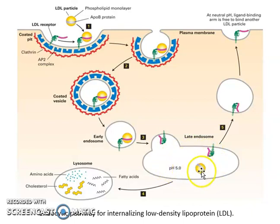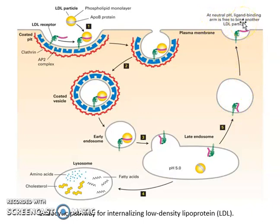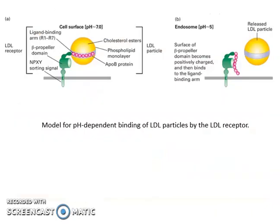The late endosome fuses with the lysosome, where enzymes degrade the LDL particle into its components — amino acids, cholesterols, and fatty acids — which are used in the cell. The receptor is then recycled back to the cell surface, where at neutral pH the ligand-binding arm undergoes another conformational change and is free to accept another LDL particle.